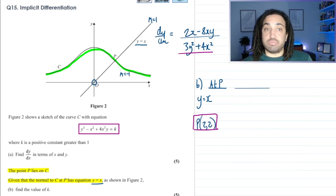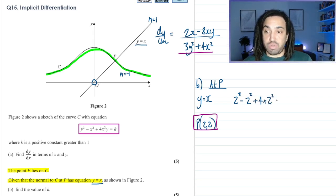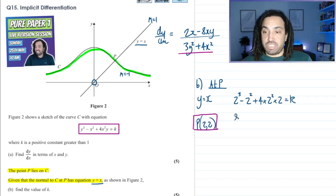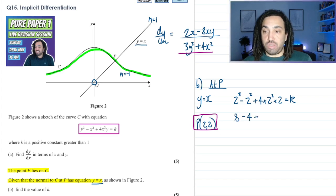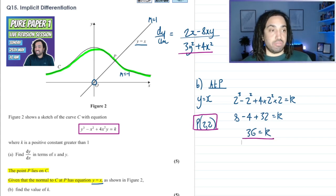So again, at p we have that the curve y cubed, so 2 cubed, minus 2x, so minus 2 times 2, plus 4 times 2 squared times 2 is equal to k. So this is 8 minus 4 plus 32 equals k. So this is 8 minus 4 plus 32, so this is 36 is equal to k. Perfect, cracking question that. Absolutely love that.